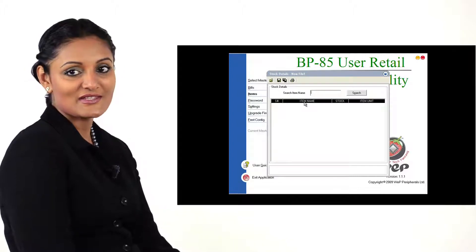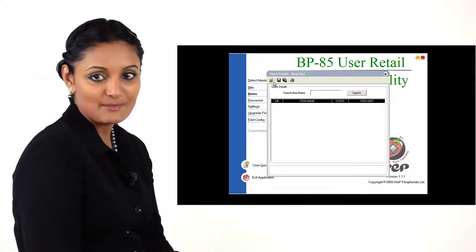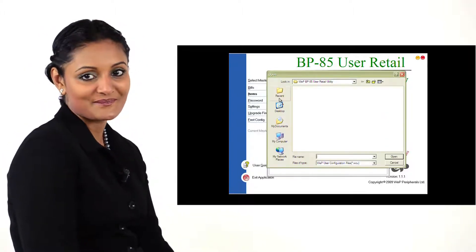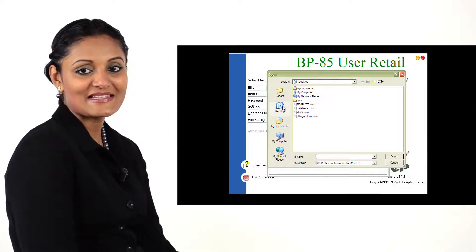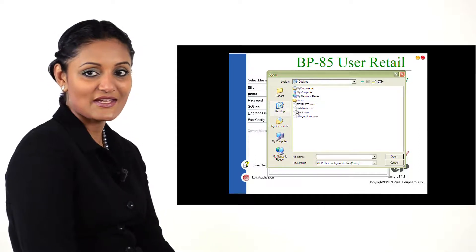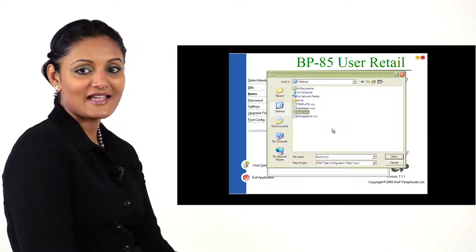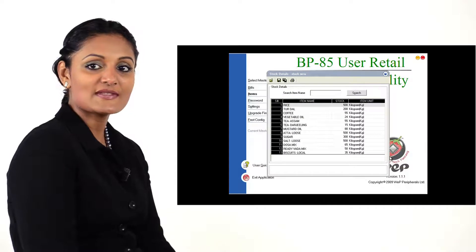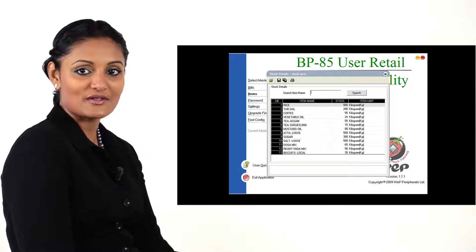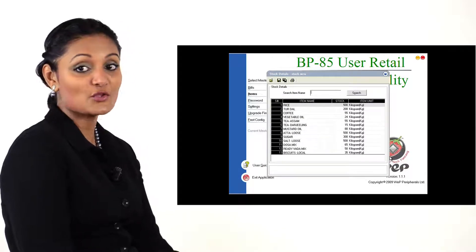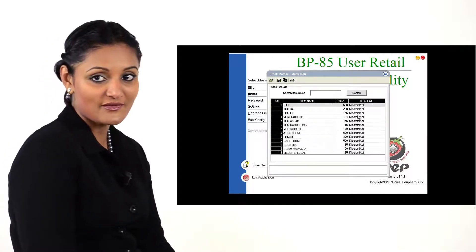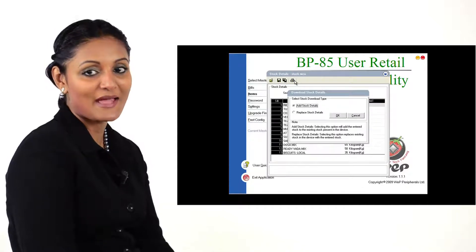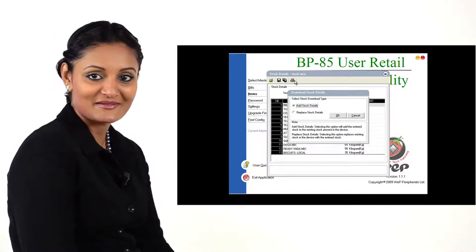In the stock details panel, click the open file icon, select the saved file and click open. To send the stock details to the USB drive, click the printer icon in the stock management panel.